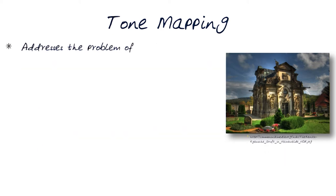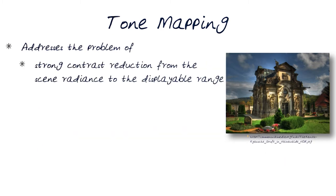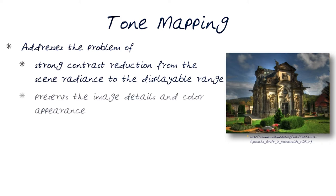Tone mapping addresses the problem of being able to get this contrast reduction from the scene radiance image — captured in the radiance map — to a displayable range. It preserves the image details and color appearance. What we did with the HDR process was capture the radiance map from a scene, but we can't display it directly, so we convert it into a displayable form. That's what tone mapping does.